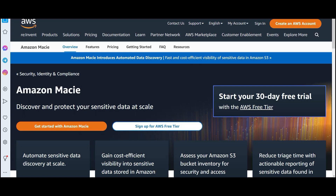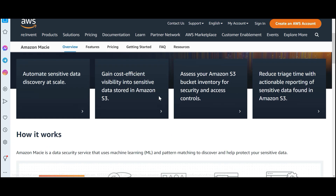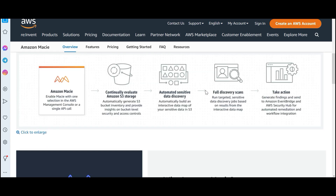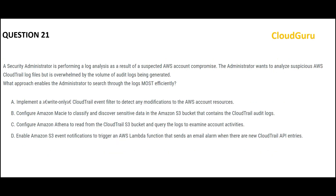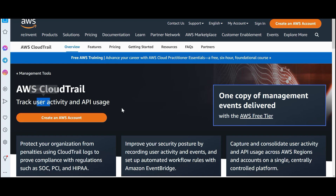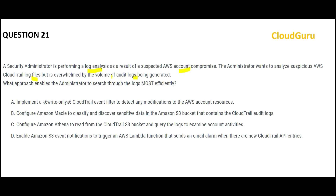Next question. There has been an account compromise and you are performing analysis. You want to analyze suspicious log files in CloudTrail because CloudTrail stores and tracks user activities and API usage activities. The problem is the audit logs are too huge — the volume is very high. We want to scan through these logs most efficiently. What solution would work here?